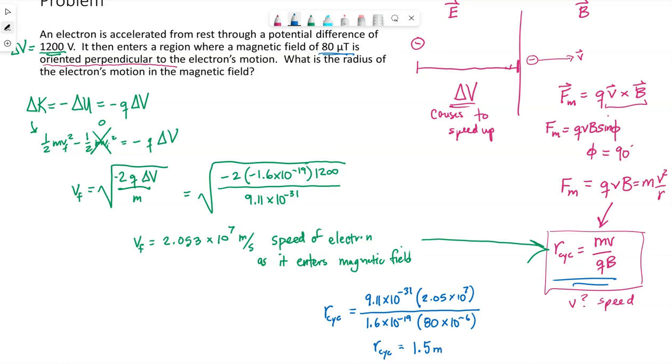The units will be in meters if all of these individual units had been in SI units. So this electron will move in circles that has a radius of 1.5 meters. That's what this means.